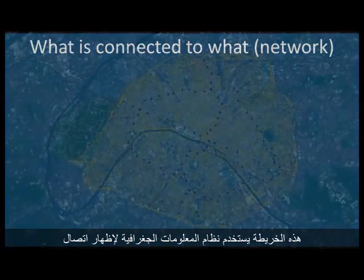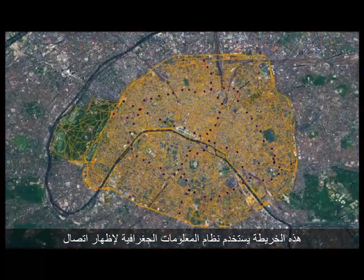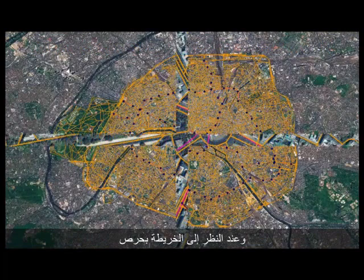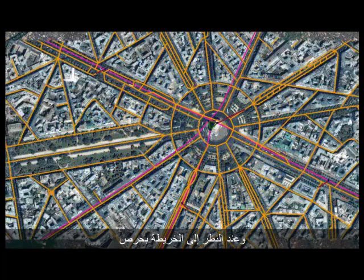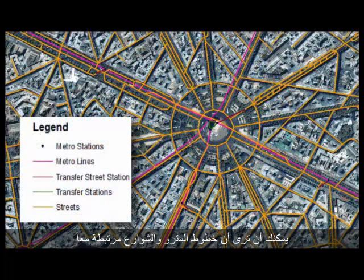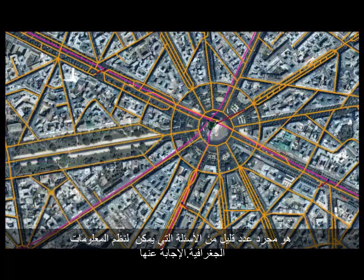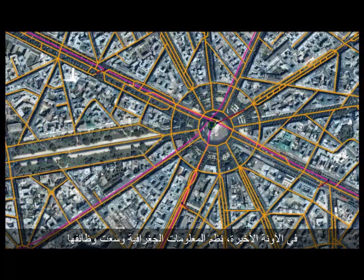Another question answered by a GIS is what's connected to what. For example, this map is using a GIS to show the connection between streets and metro lines in Paris, France. If you take a closer look, you can see that the metro lines and streets are connected with transfer and metro stations. This, along with other examples, are just a few questions that a GIS can answer.